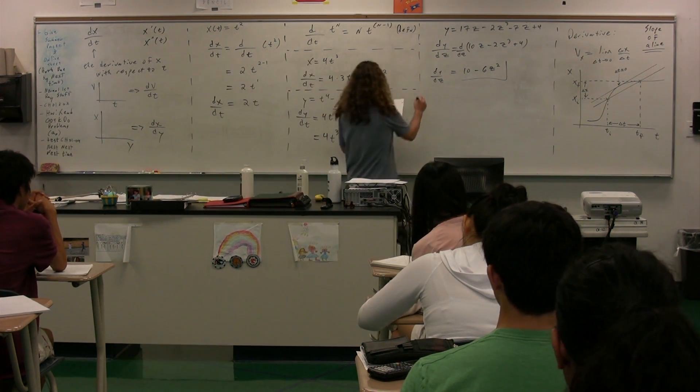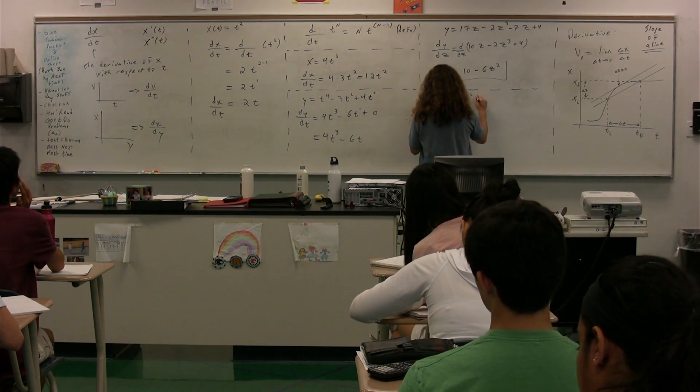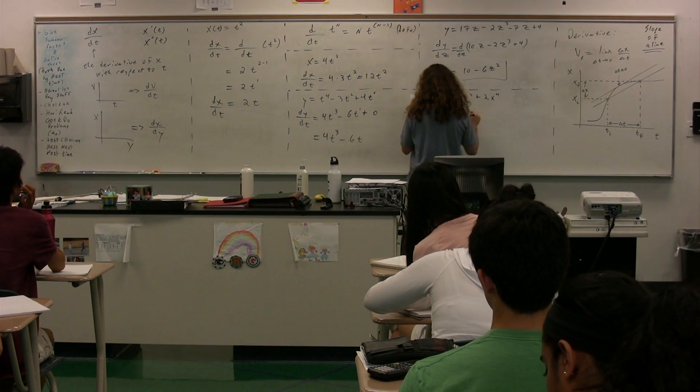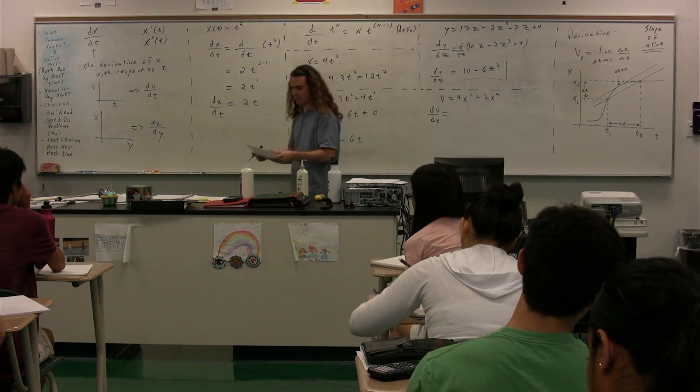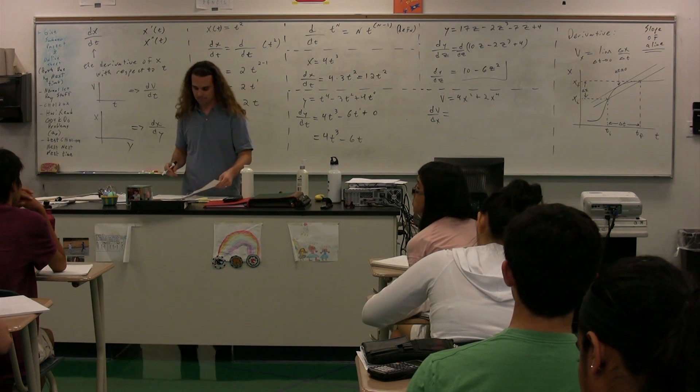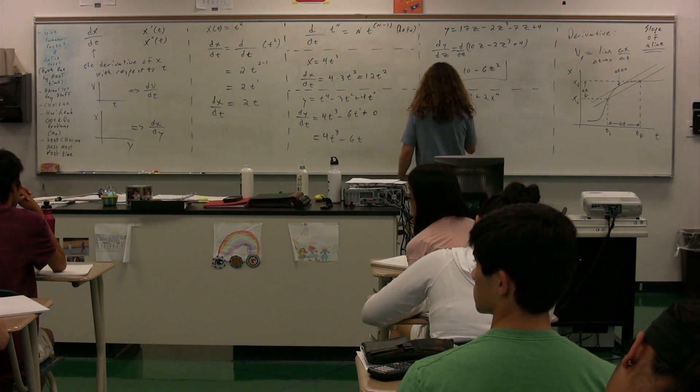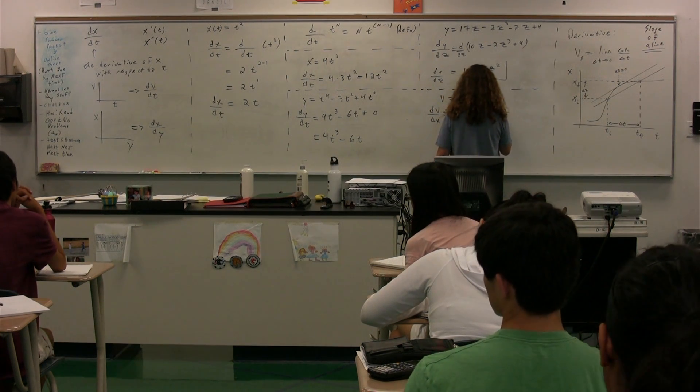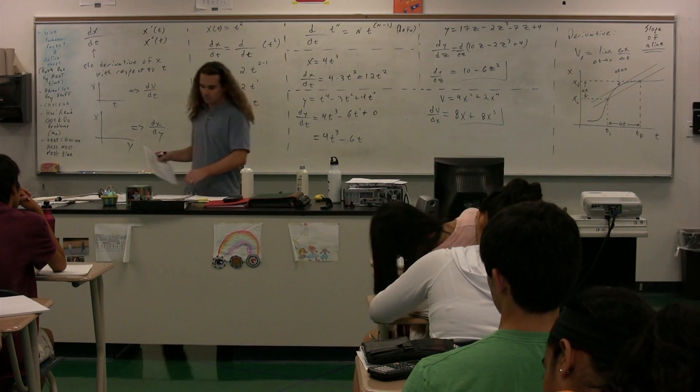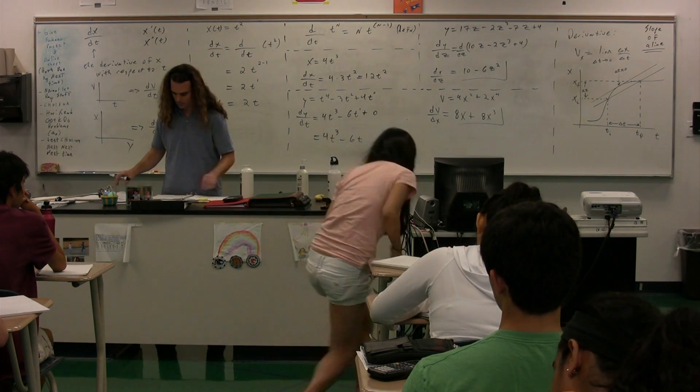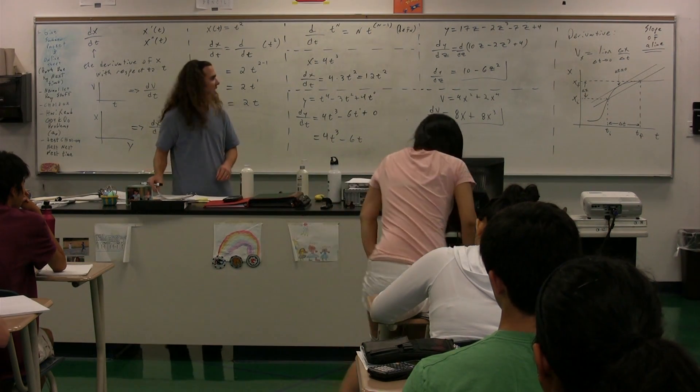All right. We'll do one more. V, the velocity equals 4x squared plus 2x to the fourth power. dv/dx. Please take the derivative of that. Debbie? 8x plus 8x to the other. 8x plus 8x squared. I'm going to agree with that. All right. So that's just sort of the math of it. Let's now actually...